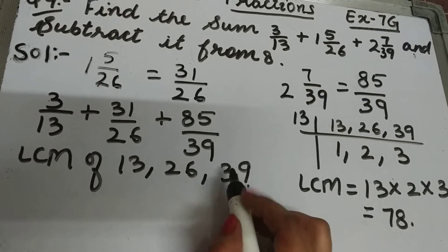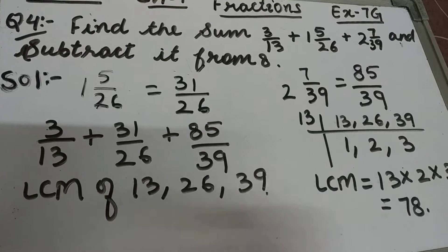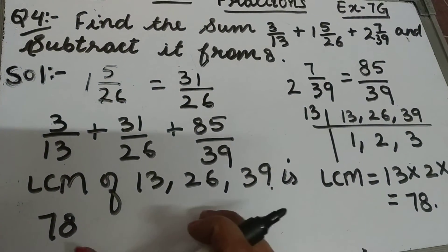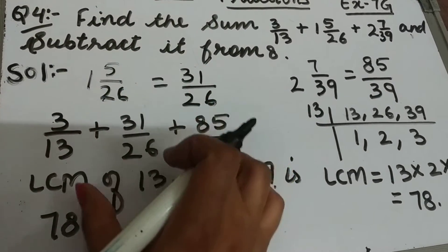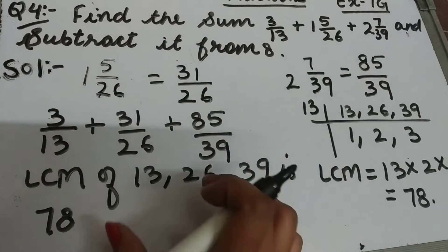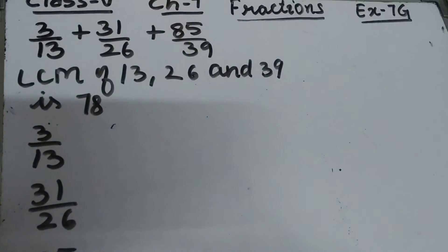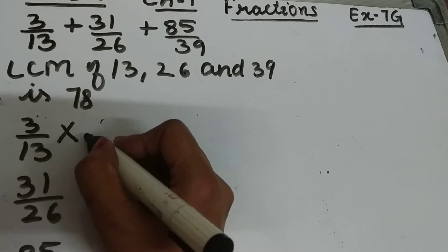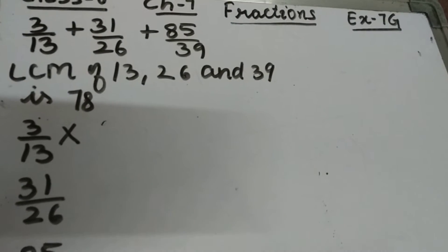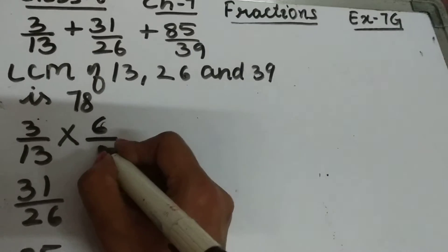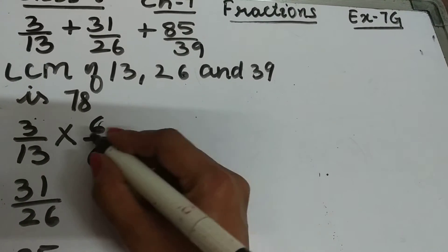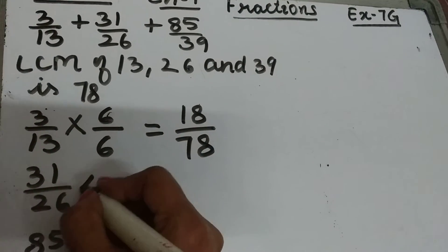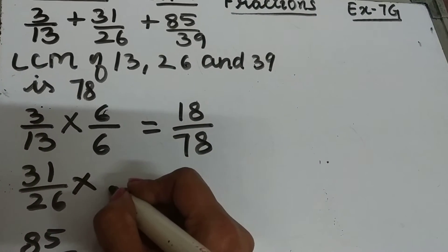Now LCM is 78. We will make the denominator of each and every fraction 78. That means we'll convert these fractions into like fractions. So for 3 upon 13, the LCM is 78, so we will multiply the numerator and denominator by 6. 3 times 6 is 18 upon 78.